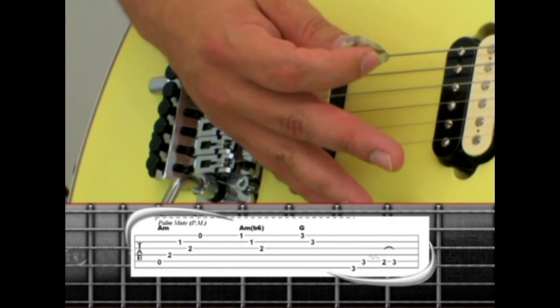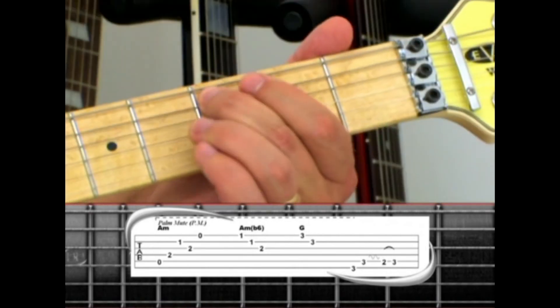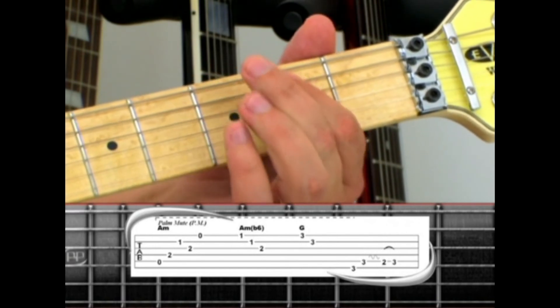Next lift the palm mute, and pick the fifth string third fret with vibrato, second fret, hammer to three.